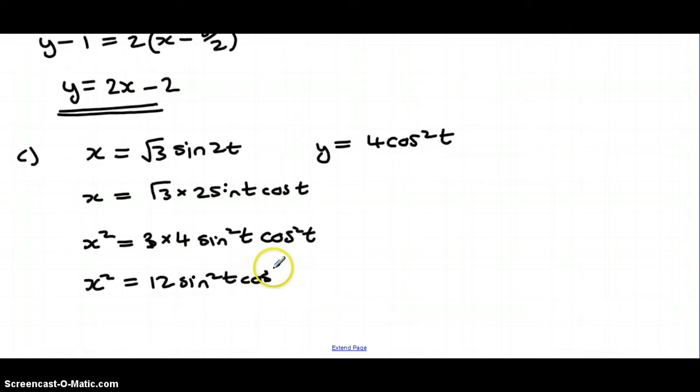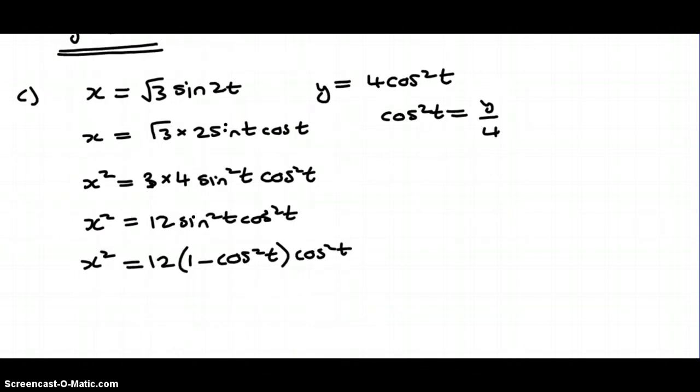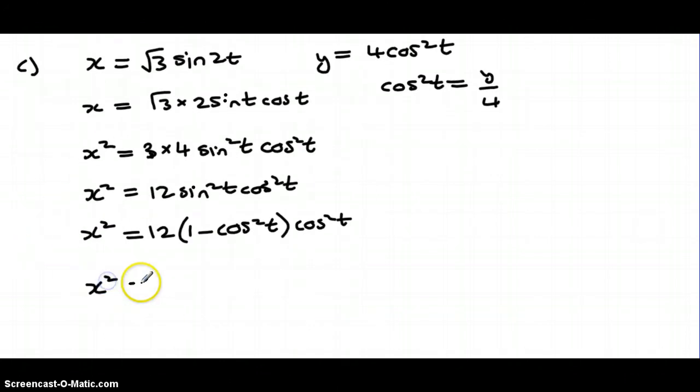Now you'll notice that we can actually replace cos squared t, the expression in terms of y, because if I rearrange this equation, I end up with cos squared t is y over 4. Now I can also replace sine squared t with 1 minus cos squared t, and that means that I can rewrite my equation just in terms of x's and y's. And there you have the Cartesian equation of that curve. I hope that does make sense.